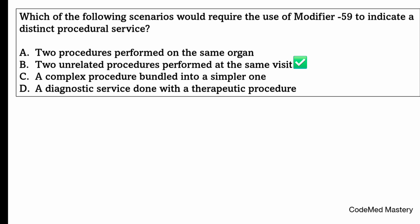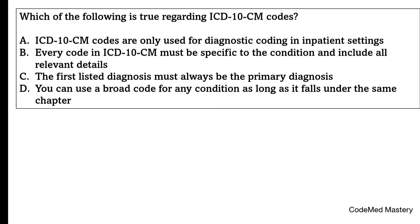Next question: which of the following is true regarding ICD-10 codes? Option A: ICD codes are only used for diagnostic coding in inpatient settings. Option B: every code in ICD-10 must be specific to the condition and include all relevant details — you must always select the most detailed and specific code available which reflects the patient's exact condition. Option C: the first listed diagnosis must always be the primary diagnosis. Option D: you can use a broad code for any condition as long as it falls under the same chapter.